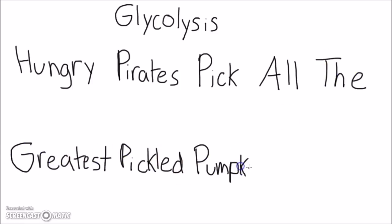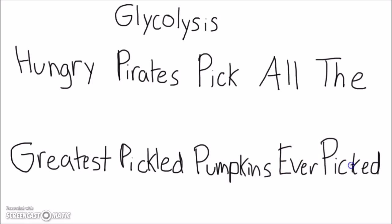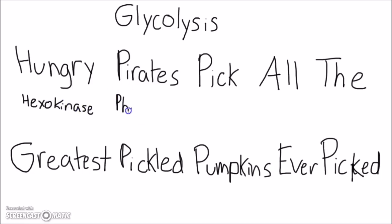The mnemonic we're going to use to memorize this is: 'Hungry Pirates Pick All The Greatest Pickled Pumpkins Ever Picked.' Each capital letter stands for an enzyme. So the first enzyme is hexokinase, and the second enzyme is P — phosphoglucose isomerase.